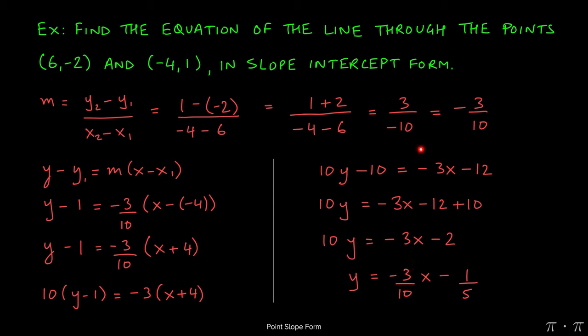Now remember, our slope turned out to be -3/10, which we were able to recover. So whether the equation of the line is in point-slope form or slope-intercept form, the slope has to be the same.